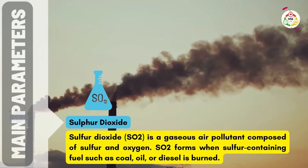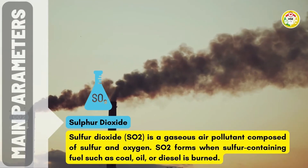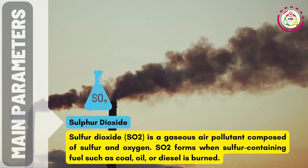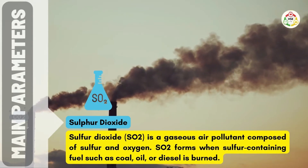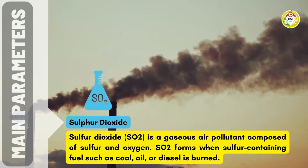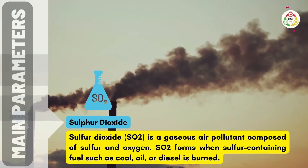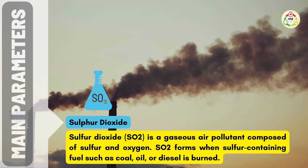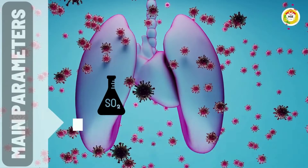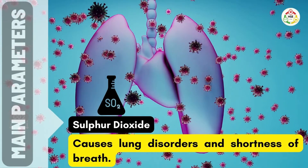Sulfur dioxide (SO2) is a gaseous air pollutant composed of sulfur and oxygen. SO2 forms when sulfur-containing fuel such as coal, oil, or diesel is burned. It causes lung disorders and shortness of breath.